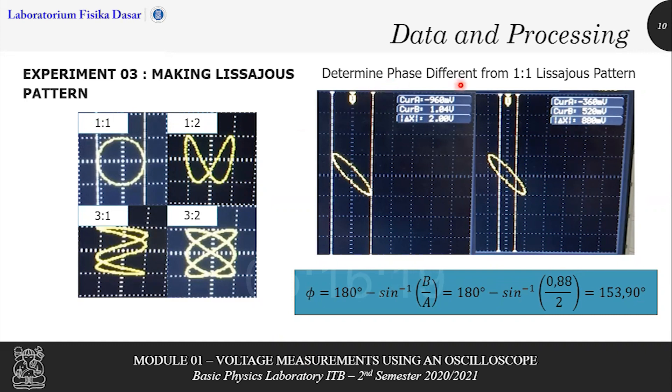As you can see from this picture, the delta x on this picture represents the value of A, the farthest point from the left to the right. As you can see, the value here represented by delta x is 2.0. And in this picture, it represents the B value. As you can see, that it is the distance between two points that cross the x-axis. The value is 880 millivolt or 0.88 volts.